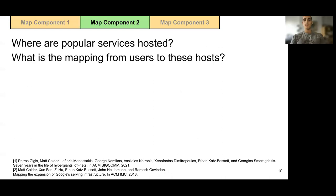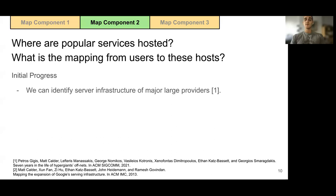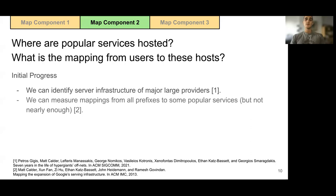Our second component identifies where popular services are hosted and the mapping from internet users to these hosts. We can measure serving infrastructure of hypergiants including Google, Microsoft, and Facebook. We can also measure mappings from internet prefixes to some services, but not nearly enough — only the ones that support a DNS extension.